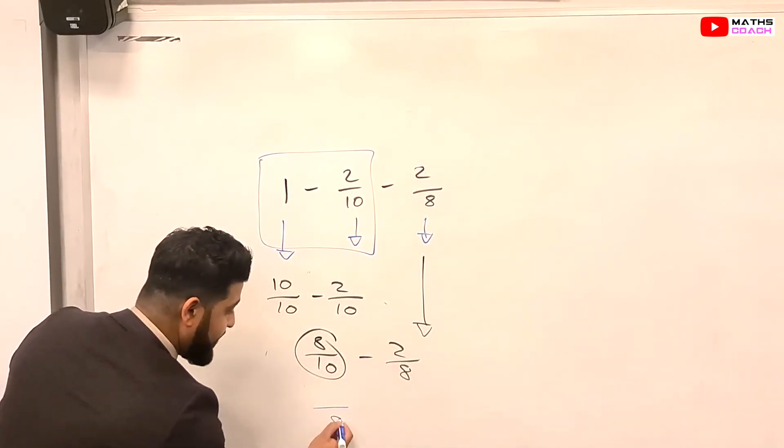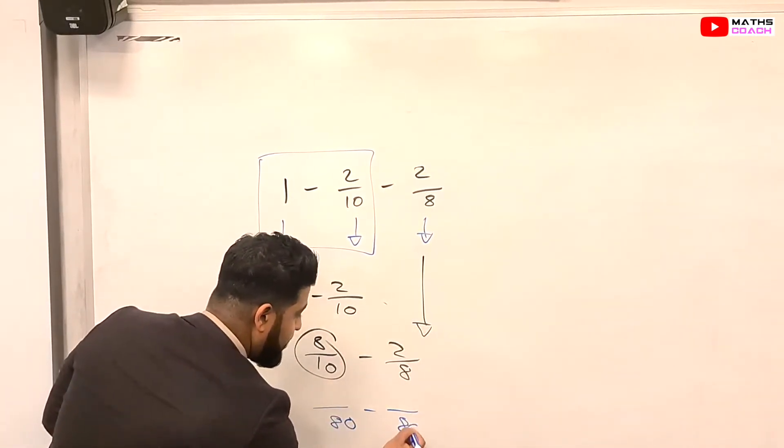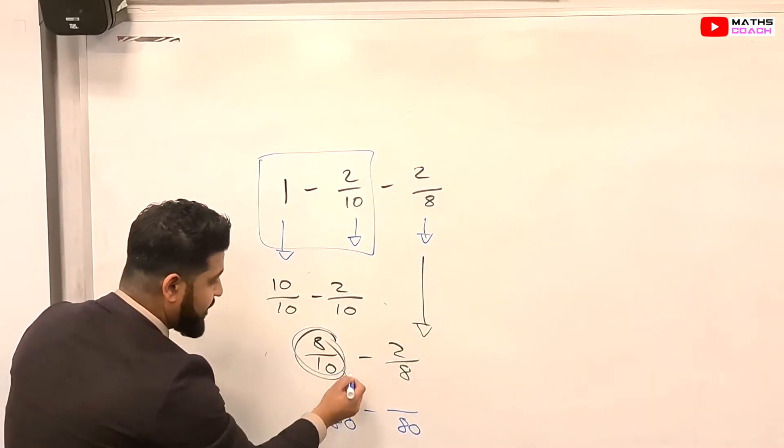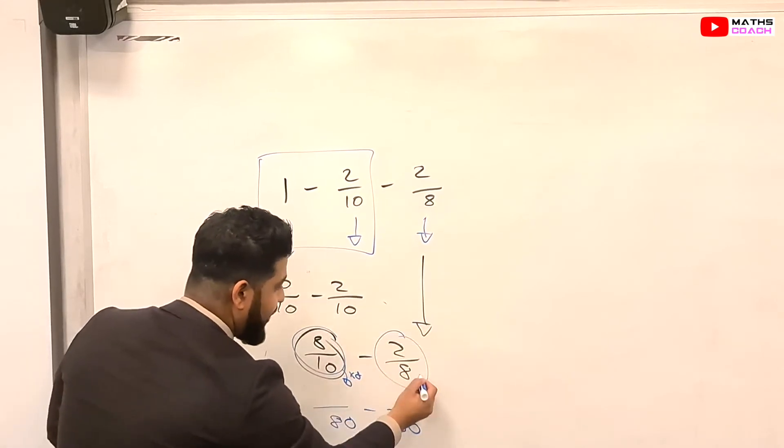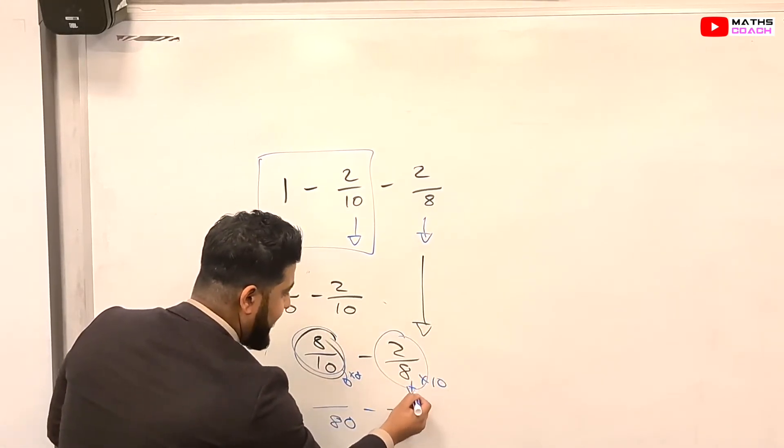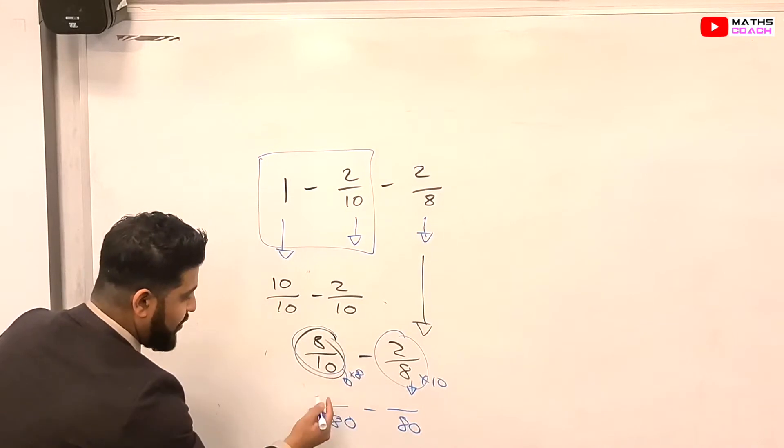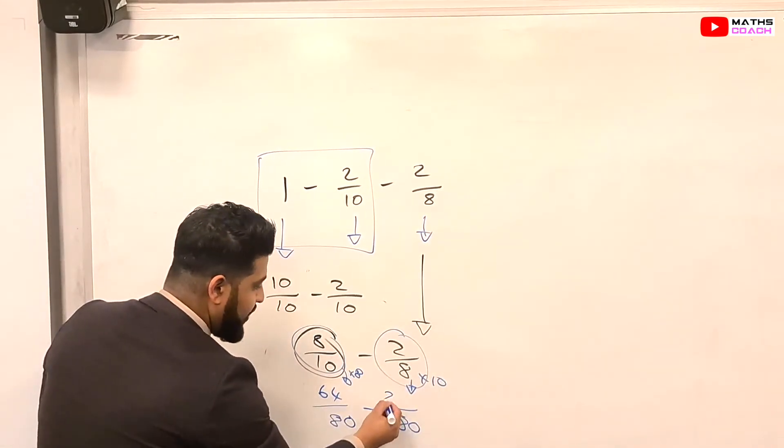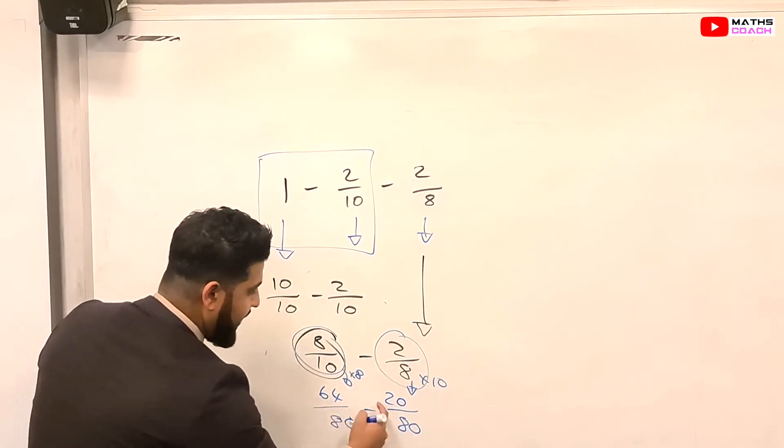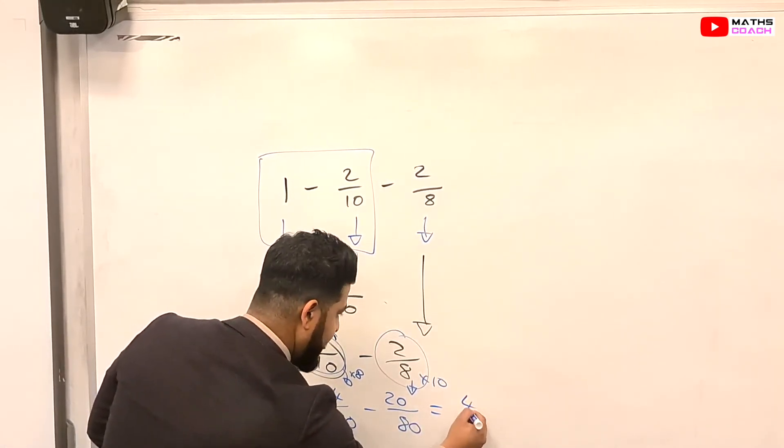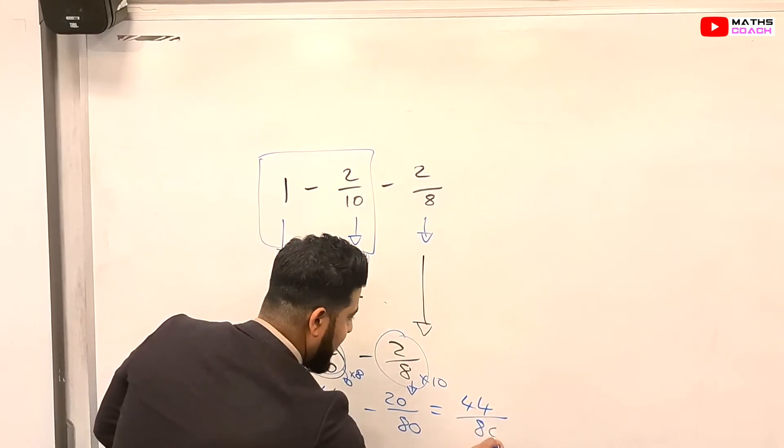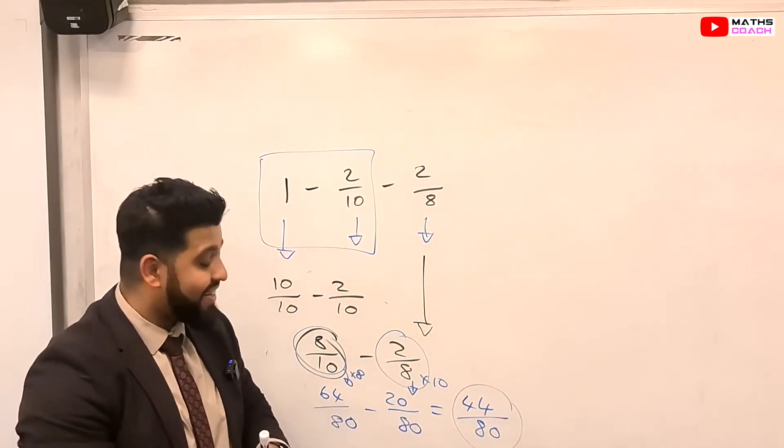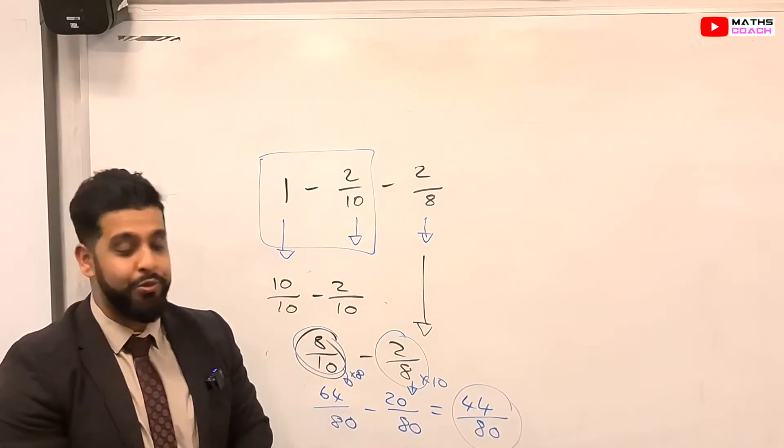So we're going to have the denominators of 80 for both of them. And we need to multiply this whole fraction, this whole fraction, by 8. And this whole fraction, we're going to multiply by 10. So 8 times by 8 will give me 64. 2 times by 10 will give me 20. 64 minus 20 gives me 44 over 80.